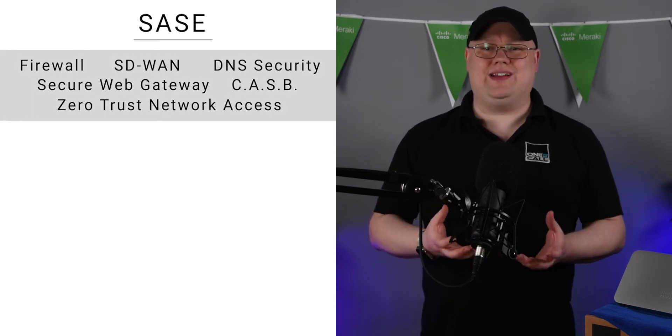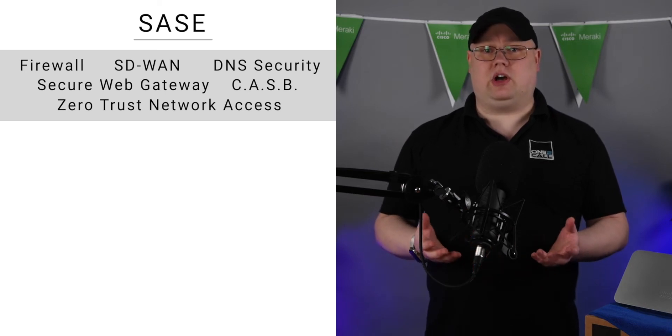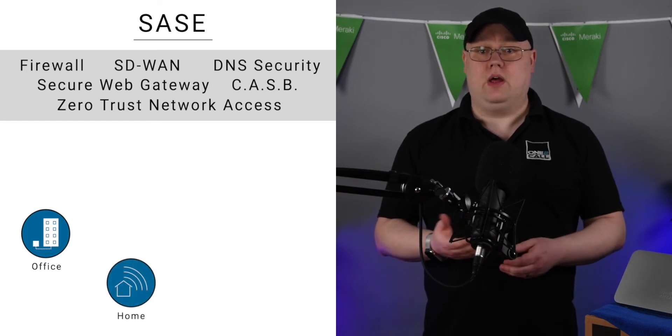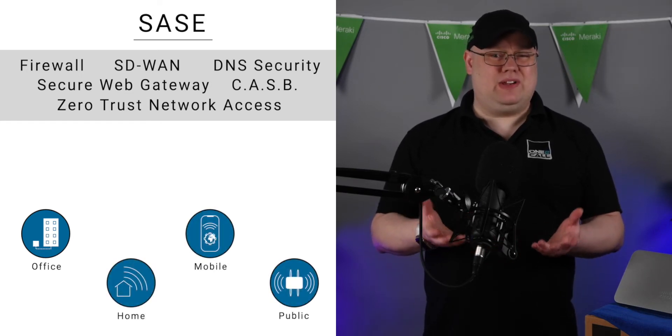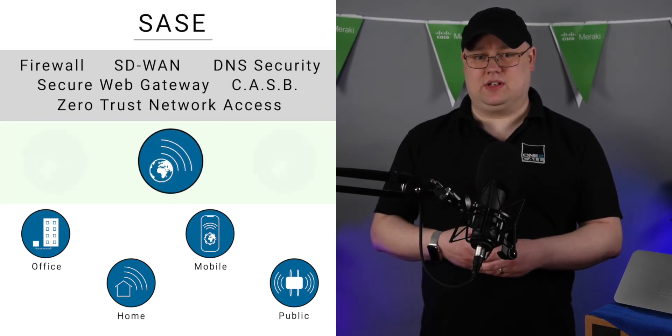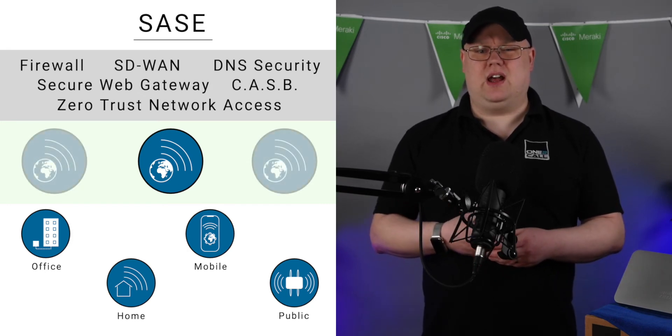SASE combines all of the services that you would usually associate with a physical security stack on your network, such as a firewall, SD-WAN, DNS security, Secure Web Gateway, Cloud Access Security Broker, and Zero Trust Network Access, but it provides all of these in a cloud-hosted service. Meaning that regardless of where your employees are located or how they're connected — whether it's via personal home broadband, mobile data, or public Wi-Fi — they will be connected to your SASE service via their nearest regional point of presence, with multiple redundant failovers, and then protected by all of your security tools whilst having the best experience possible with the services that they use.